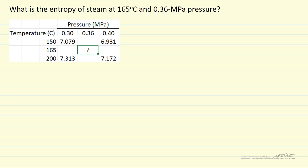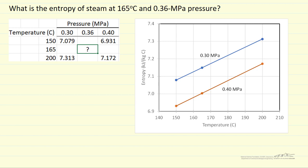So this is a double interpolation. Again let's look at a plot. So here I've plotted the entropy at 0.3 MPa, this is the graph, the plot we've already seen.